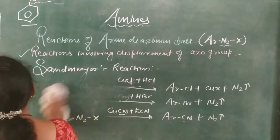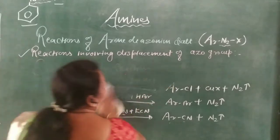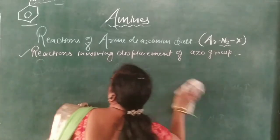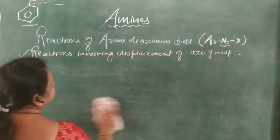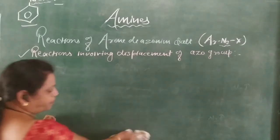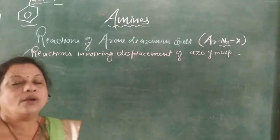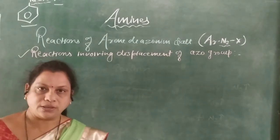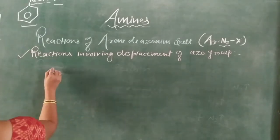After the Sandmeyer reaction, the next one is called the Gattermann reaction. In the Gattermann reaction, instead of CuCN, CuBr, or CuCl, copper powder is used. The mechanism is the same.